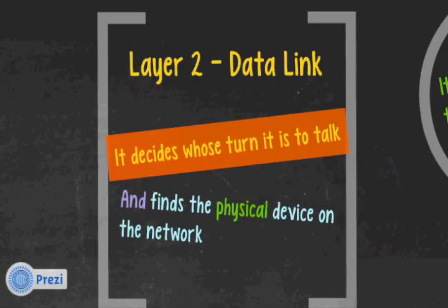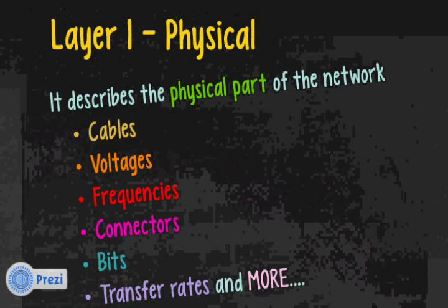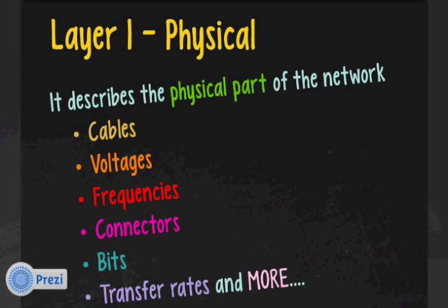Layer one, the physical layer, describes the physical part of the network — the stuff you can touch and feel. This includes cables: the cable type (coax or twisted pair), physical properties like capacitance per foot, cable length, number of strands and pairs, shielding, voltages, and frequencies. It describes connectors — for example, RJ45 for Ethernet (technically called 8P8C). It could also be wireless, microwave, or fiber optics.